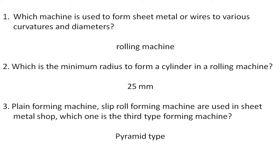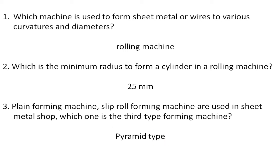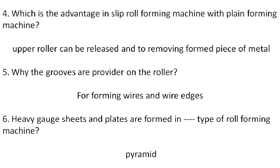Plain forming machine and slip roll forming machine are two types used in the sheet metal shop. The third type of forming machine used in the sheet metal shop is the pyramid type roll forming machine. Which is the advantage of the slip roll forming machine over the plain forming machine?